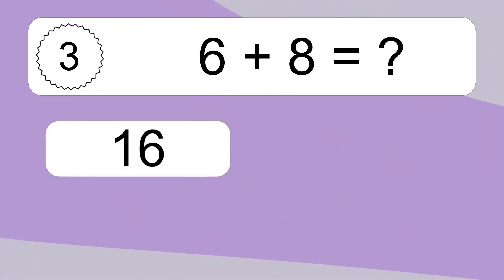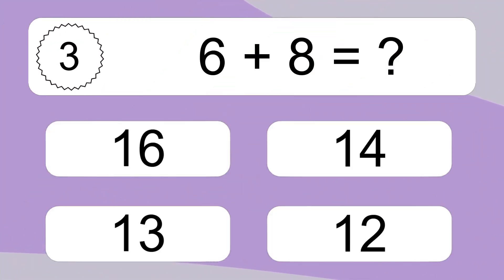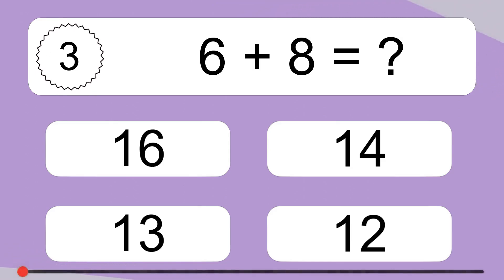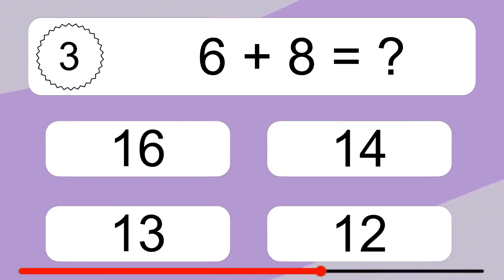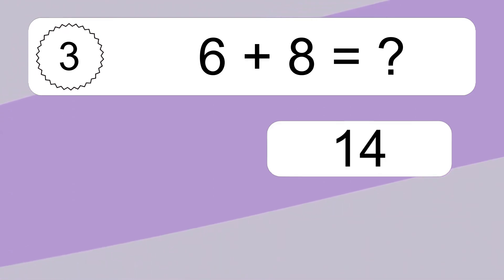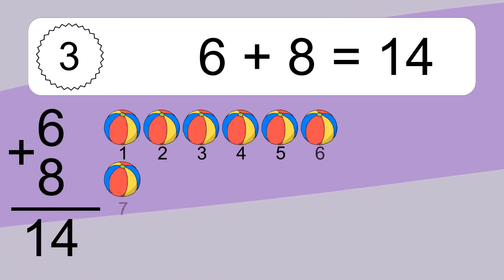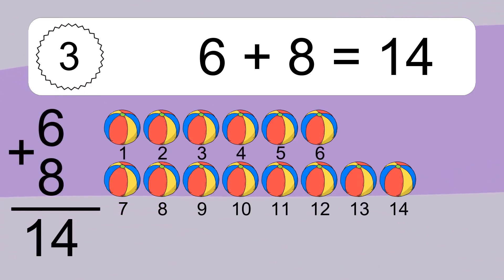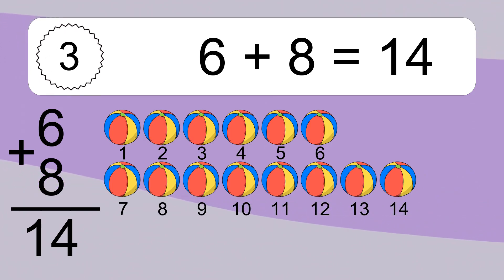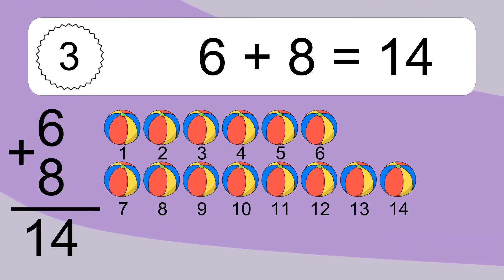6 plus 8 equals what? 6 plus 8 equals 14. Let's count it. 1, 2, 3, 4, 5, 6, 7, 8, 9, 10, 11, 12, 13, 14.